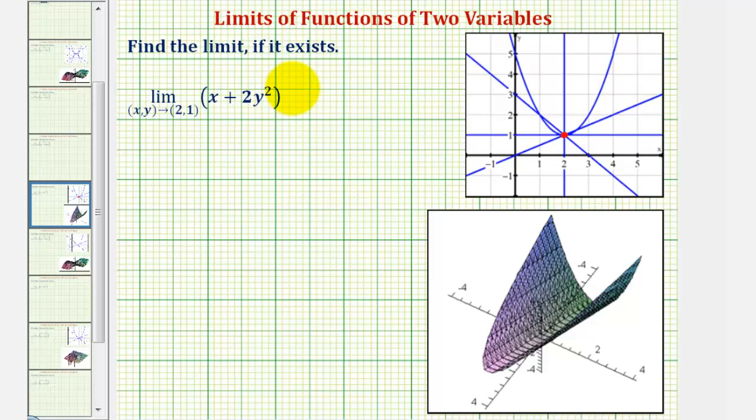Now we'll look at two examples of determining limits of functions of two variables. Here we have the limit as (x, y) approaches (2, 1) of (x + 2y)².